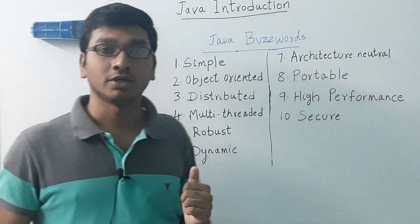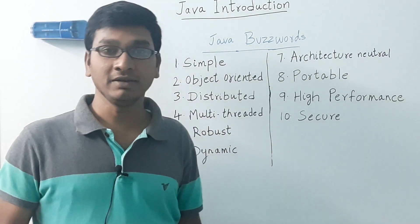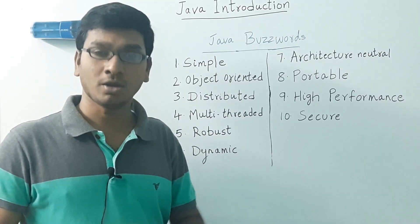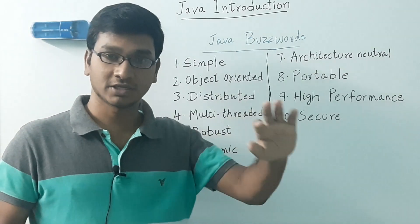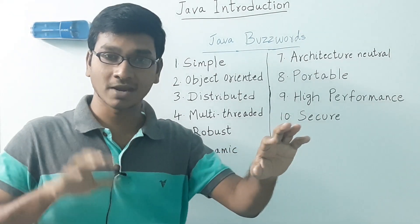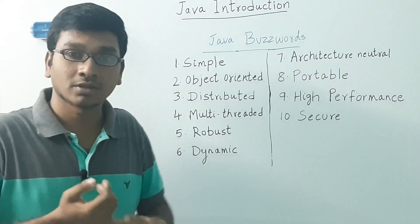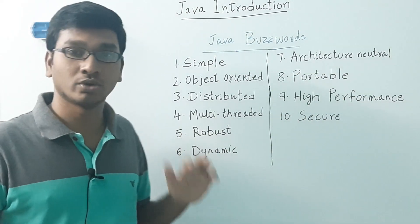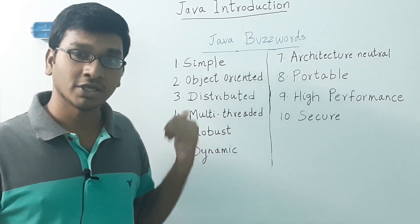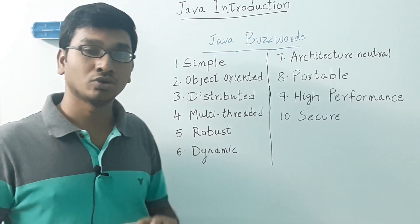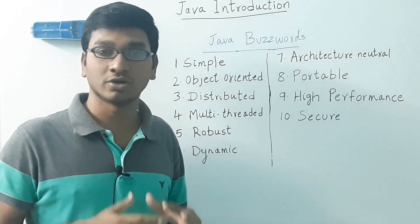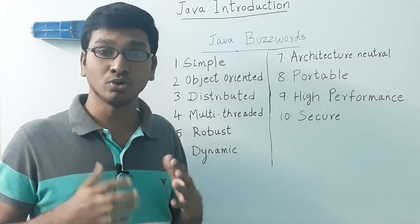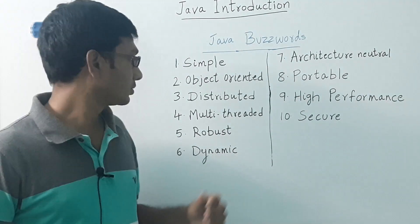Next: object oriented. In the real world, everything is considered as an object. An object is a combination of fields — its attributes and methods. Classes and objects are the two main aspects of object oriented concepts. In Java, you can't write a single program without creating a class. That's why Java is called a pure object oriented programming language.